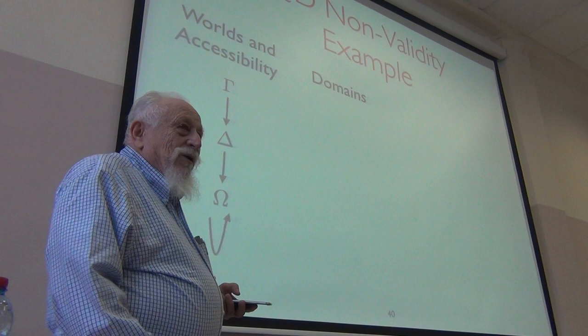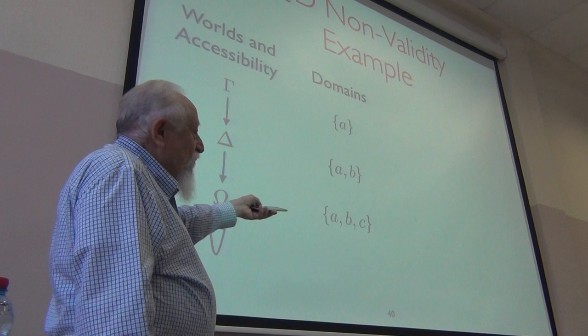Each world has to have a domain associated with it. For that, it's A. For this, it's AB. For this, it's ABC. So we've got monotonicity.